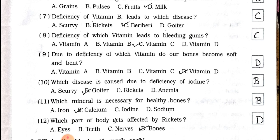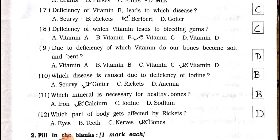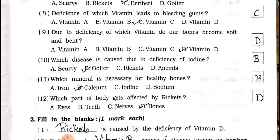Number eight: deficiency of which vitamin leads to bleeding gums? A) Vitamin A, B) Vitamin B, C) Vitamin C, D) Vitamin D. Answer is option C — Vitamin C. Number nine: due to deficiency of which vitamin do our bones become soft? A) Vitamin A, B) Vitamin B, C) Vitamin C, D) Vitamin D. Answer is option D — Vitamin D.